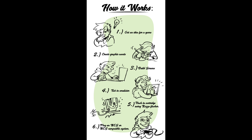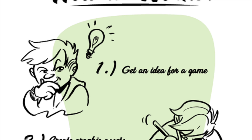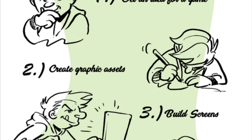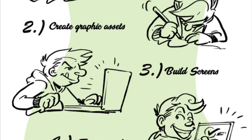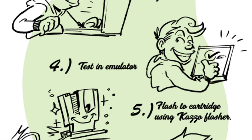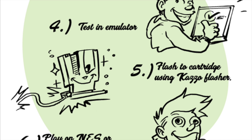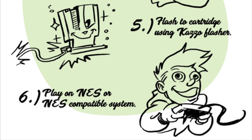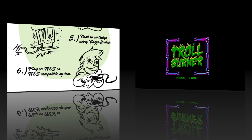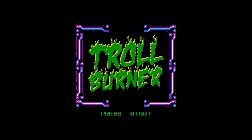On their Kickstarter page they also break down how it works: you get an idea for a game, you create graphics and assets, you build the screens, you test in an emulator, you can then flash the game to a cartridge and then play it on an NES or an NES compatible system. Alright, so we're gonna check out Troll Burner, a game made with NES Maker.